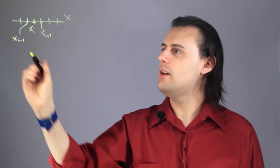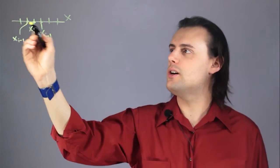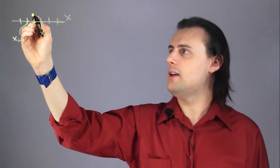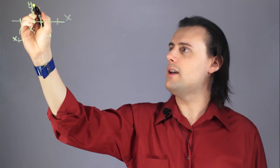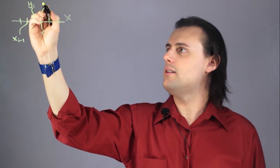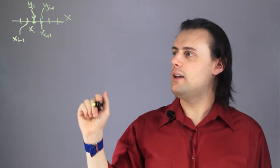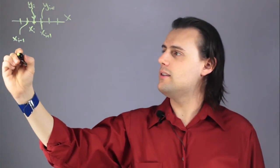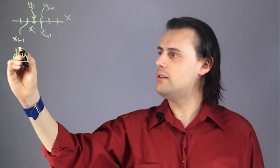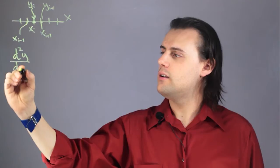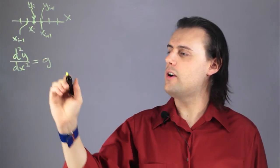And I might have some function that has a value at each of these points, and so this function at x_i would have value y sub i, and y sub i plus one, and so on and so forth. And as an example we can consider a second order differential equation in space: d²y over dx² will be equal to some variable g.